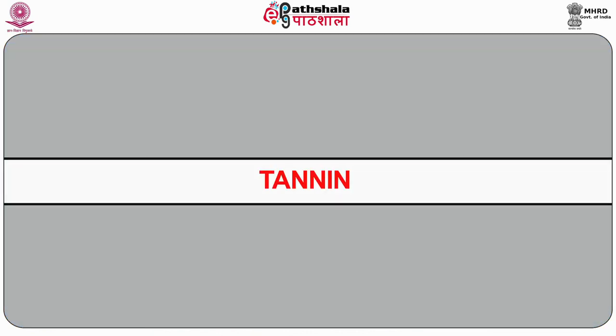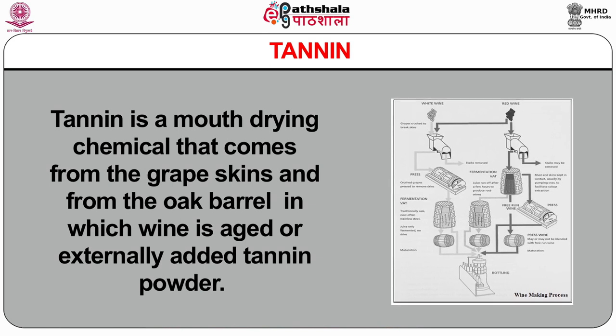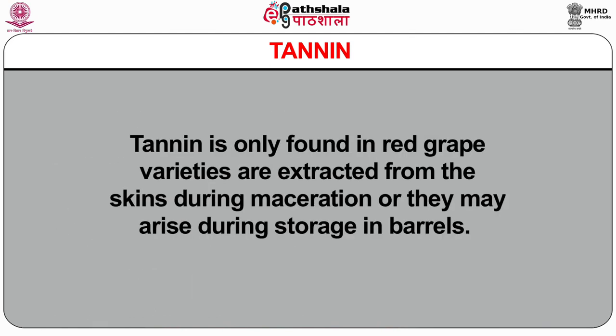Tannin is a mouth-drying chemical that comes from the grape skin and from the oak barrel in which wine is aged, or from externally added tannin powder. Tannin is only found in red grape varieties and is extracted from the skins during maceration or may arise during storage in barrels. Its quality and quantity is defined by various factors such as grape variety, maturity of the grapes and duration of maceration. Tannins are responsible for the structure of wine and play an essential role in ageing, noticeable as a sensation of astringency which gives a chewiness to the wine.